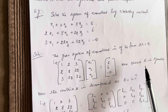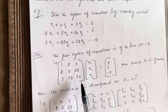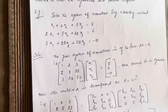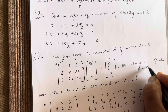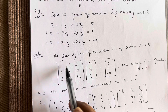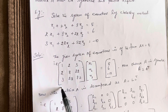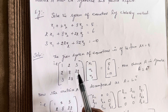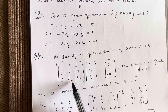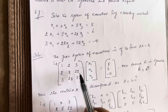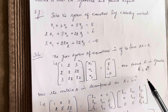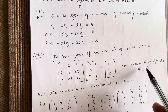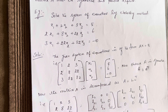We can observe that A is a symmetric matrix. For a symmetric matrix, the property is A must equal A transpose. Taking the rows as columns: row one gives 1, 2, 3; row two gives 2, 8, 22; row three gives 3, 22, 82. Even after interchanging rows and columns it remains the same, so this is a symmetric matrix.